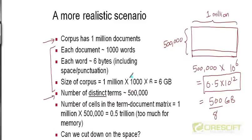As an aside, this corpus with a million documents — if they are typical news documents — will have each document about 2 to 3 book pages long, which is about 1000 words. Let's assume each of these million documents is about 1000 words long, and each word is about 6 bytes long. These are not unreasonable assumptions; they are numbers calculated empirically from a typical news corpus.